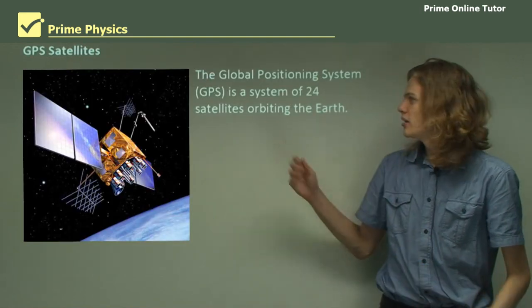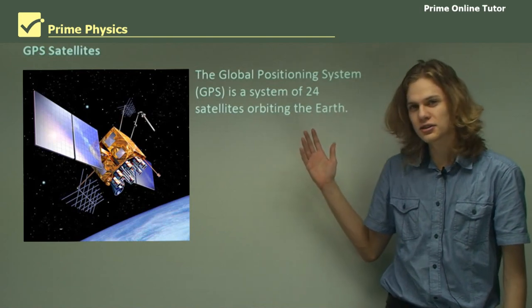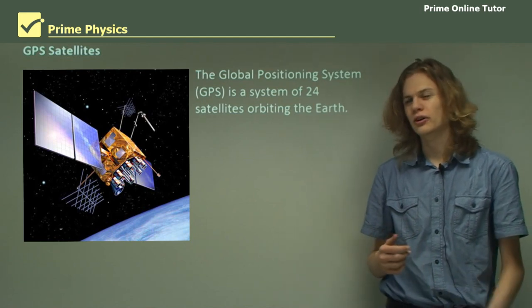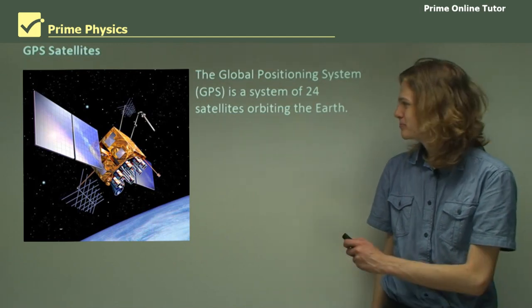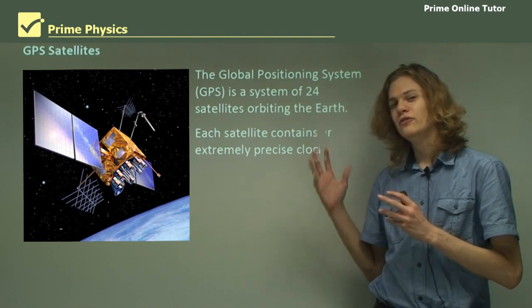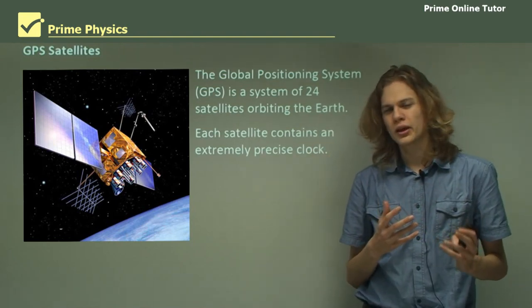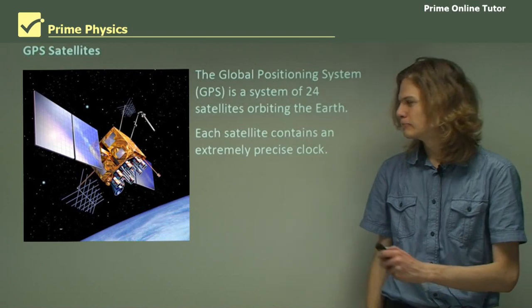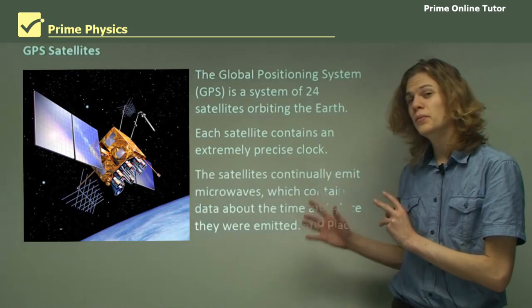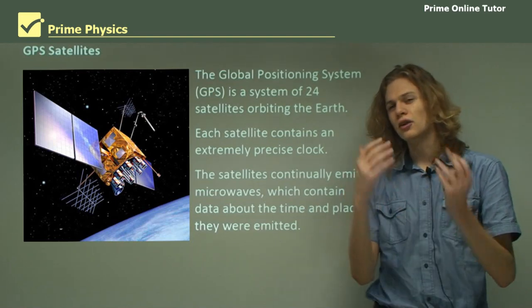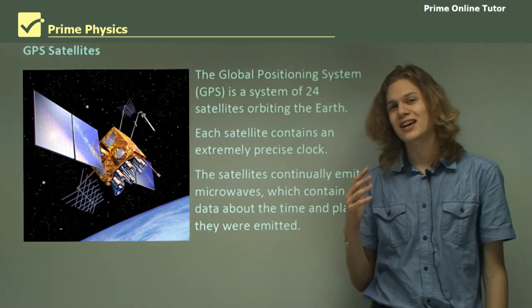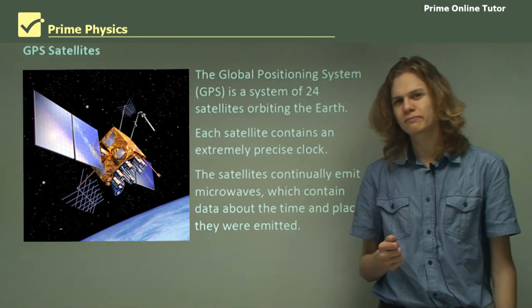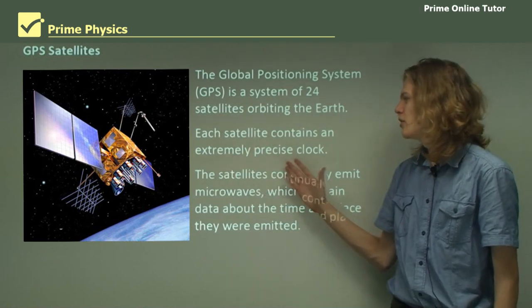The global positioning system is a system of 24 satellites in orbit around the Earth. They were launched over a series of years. Each satellite contains a very precise clock on board and a radio transmitter which sends out information about this clock. The satellites continually emit microwaves which go down to the surface of the Earth, containing information about the exact time at which they were emitted according to its very accurate atomic clock.